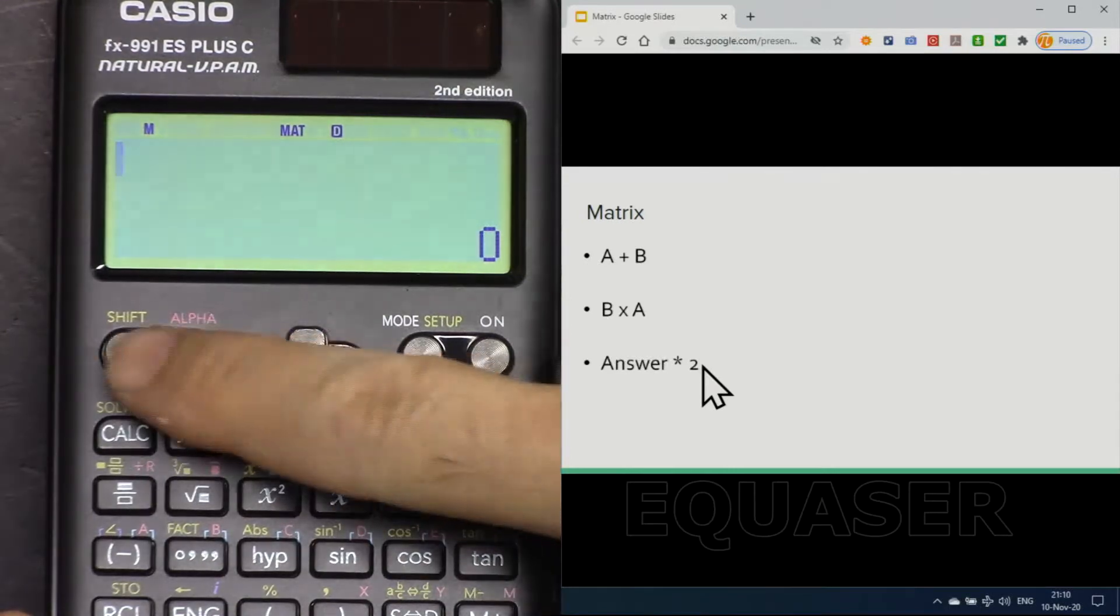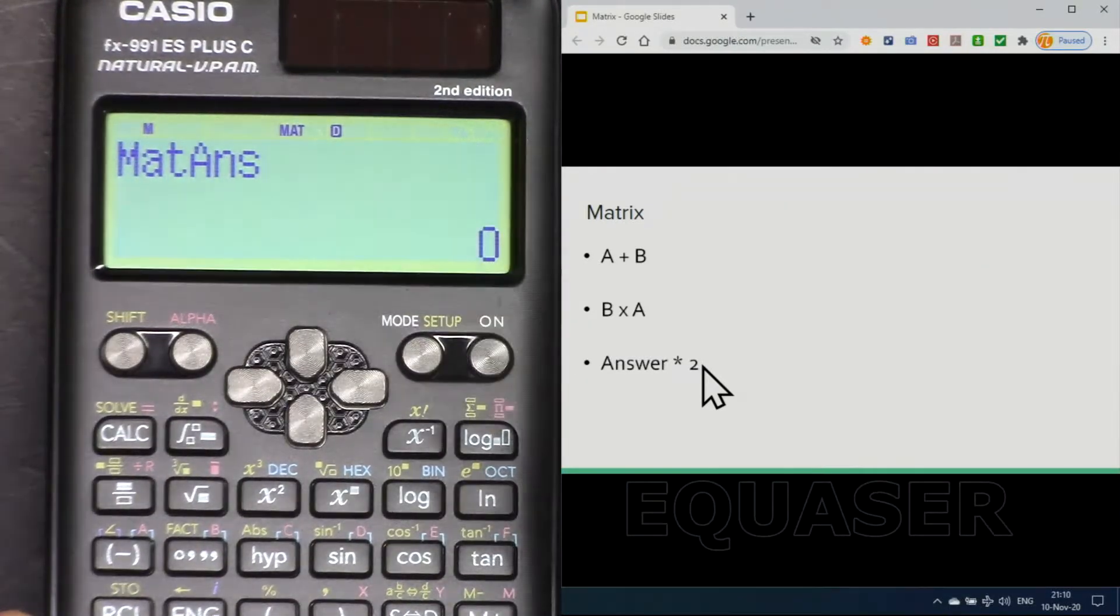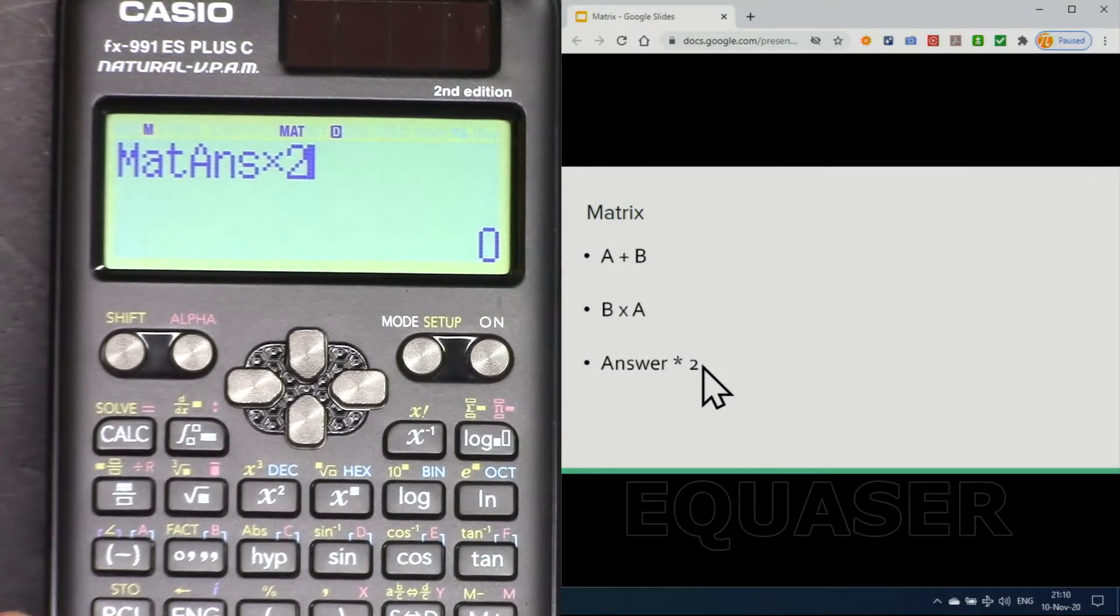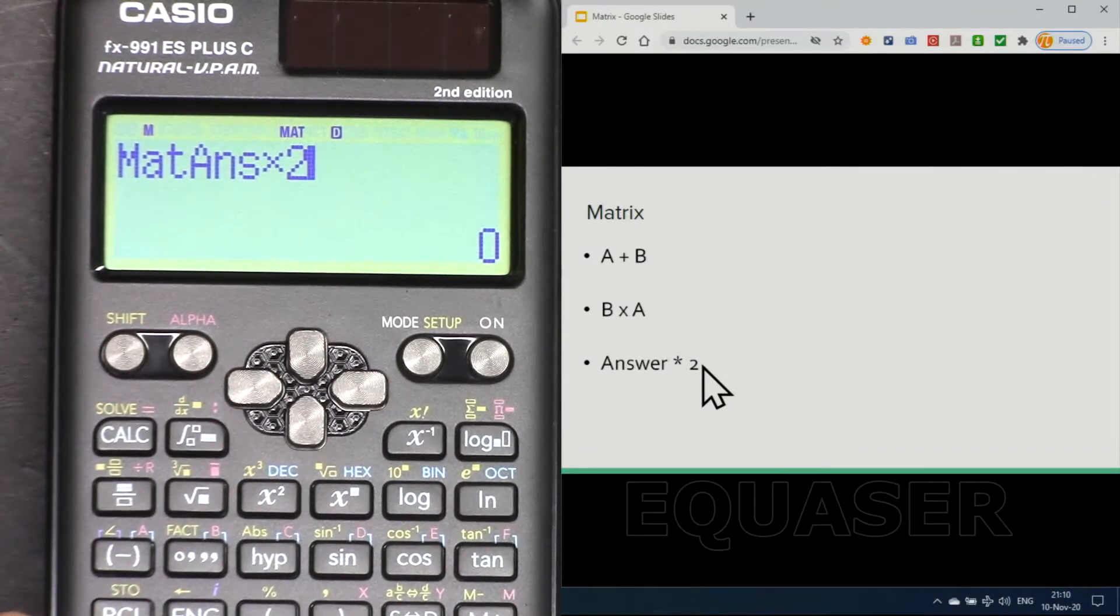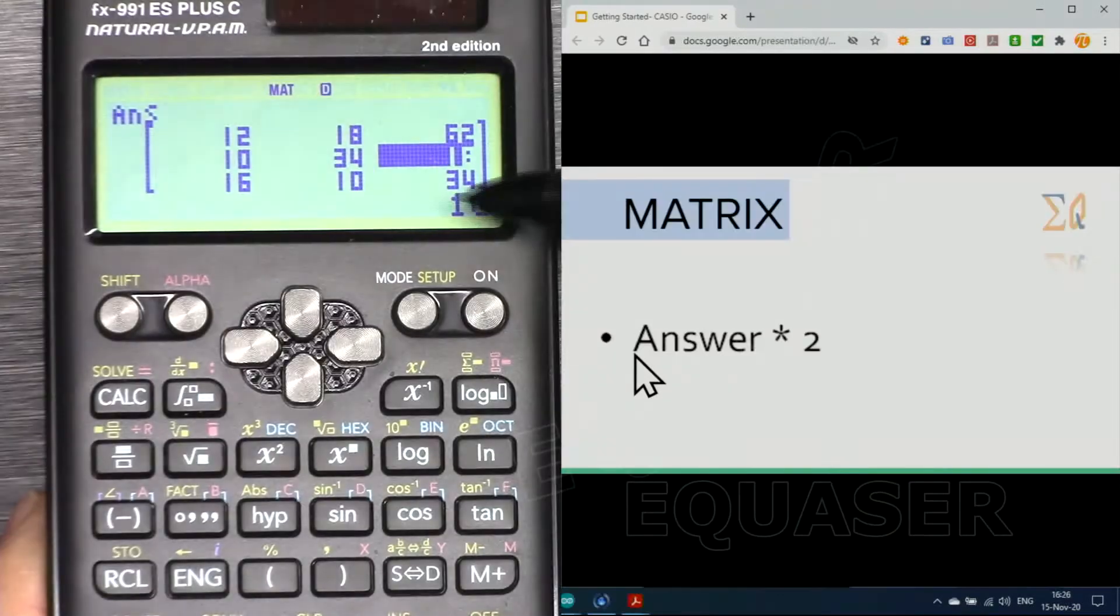And then answer multiply by two. So we want to get the answer: shift matrix, matrix answer 6, and then multiply by two, which means all the rows and columns will be multiplied by two, each cell. And this is the value.